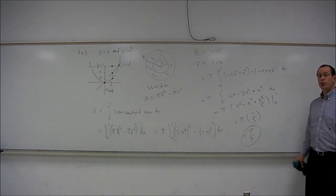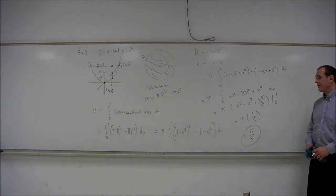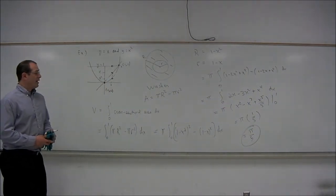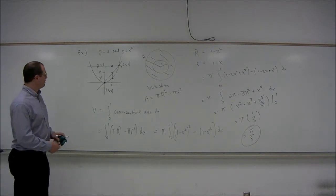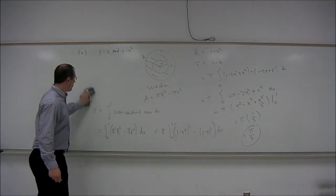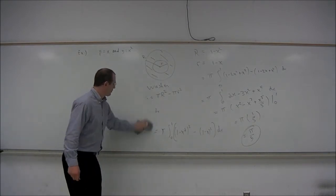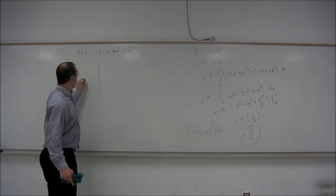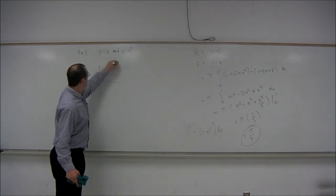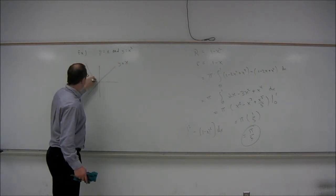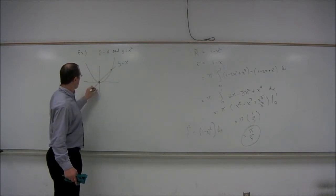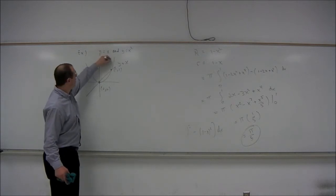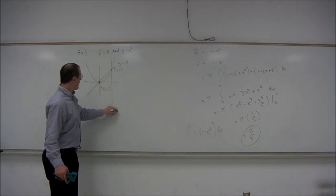The volume of the solid of revolution is pi over 5. Now let's look at a similar problem: y equals x and y equals x squared, with intersection points (0, 0) and (1, 1). This time, let's revolve the region around the vertical line x equals 1.